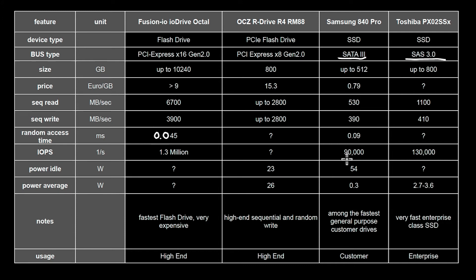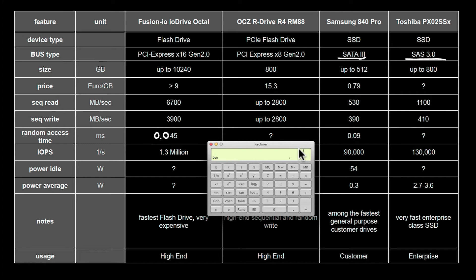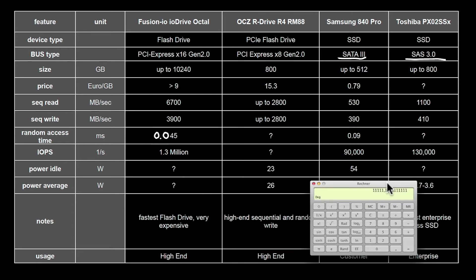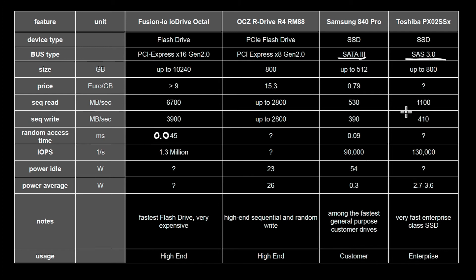Here we already see the effect of IOs per second — this is 90,000 operations per second. This is way more than 1 second divided by 90 microseconds, which would give you about 11,000 operations per second. But here you get 8 times more — 90,000 IOs per second. This means the drive can handle those operations in parallel and do some magic to cope with 8 times more random IO operations. This is among the fastest general-purpose consumer drives, and the price is still in a very decent range for an SSD.